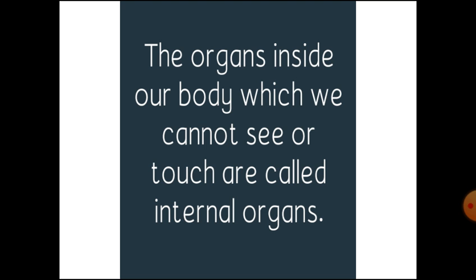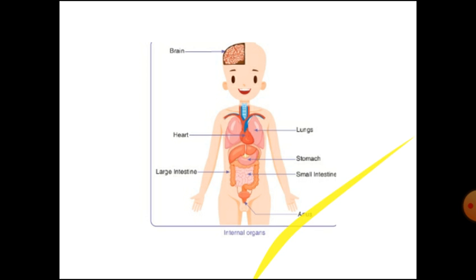The organs inside our body which we cannot see or touch are called internal organs. We cannot see or touch our internal organs like brain, heart, large intestine, lungs, stomach.